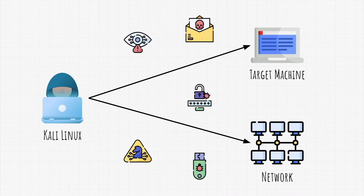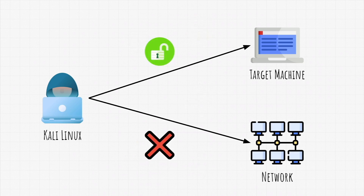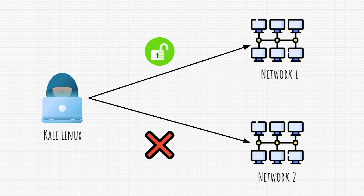The first and most important thing before we even start a penetration test on a target is to figure out whether we have permission to attack that target. This is very important since you don't want to be attacking machines or target networks you do not have permission to attack. It could be that a client told you to only test one machine on the network and not the entire network, or that the client has multiple networks and only allowed you to test one of them. Always have permission to perform a penetration test.